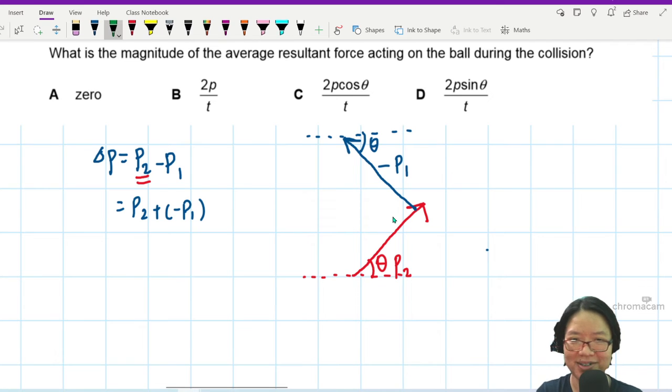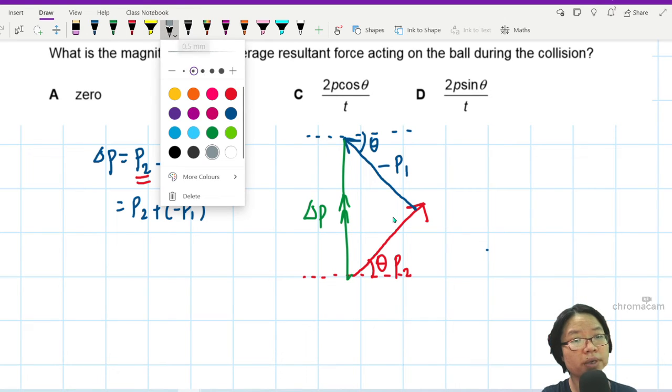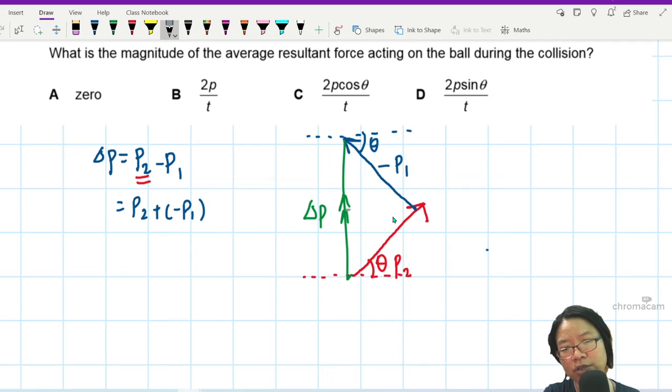And then where is the change? The change is p2 minus p1, which is actually equal to p2 plus negative p1. These are vectors. You cannot minus vectors. So the resultant is actually here. Is it vertical? I don't know. Better not say. I mean, I know it's vertical because I already resolved. Let's say you don't know. So this is the change in momentum. But you cannot conclude whether it's vertical or not just based on what we had just now.